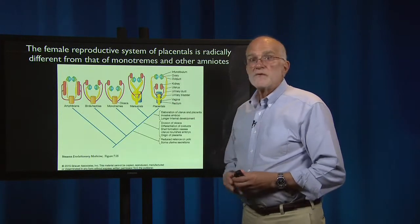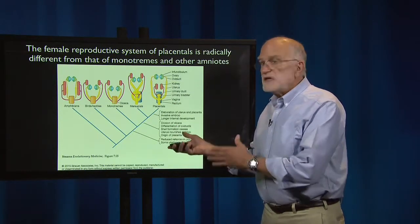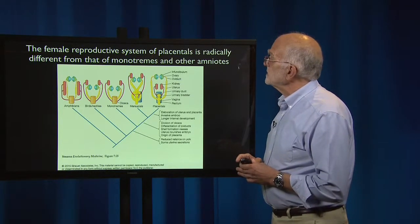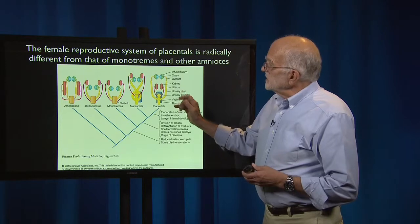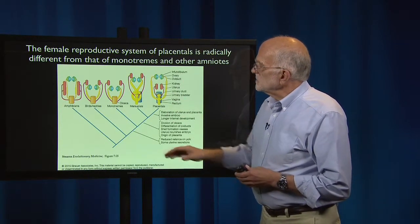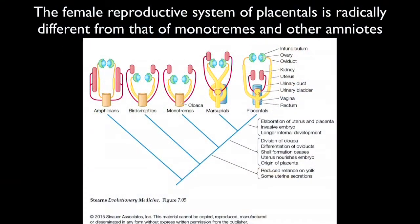Now let's take a look at the female reproductive system. We needed all that history to set up this neat thing about its developmental control. In eutherians, it is radically different from monotremes and other amniotes. The monotremes are the duck-billed platypuses and the spiny echidnas. As we go from amphibians through birds and reptiles to monotremes to marsupials to placentals, you can see we go from having a cloaca to having a vagina and then finally a well-developed uterus.